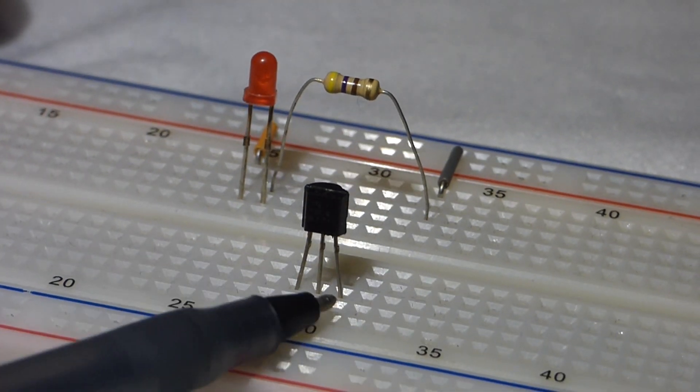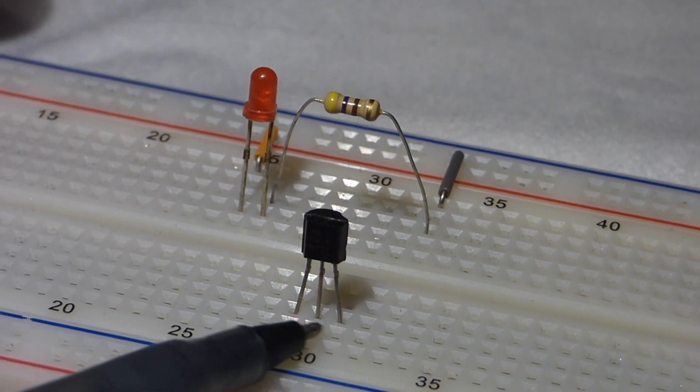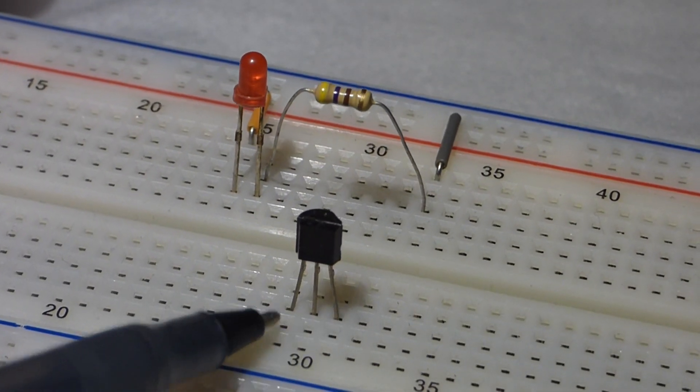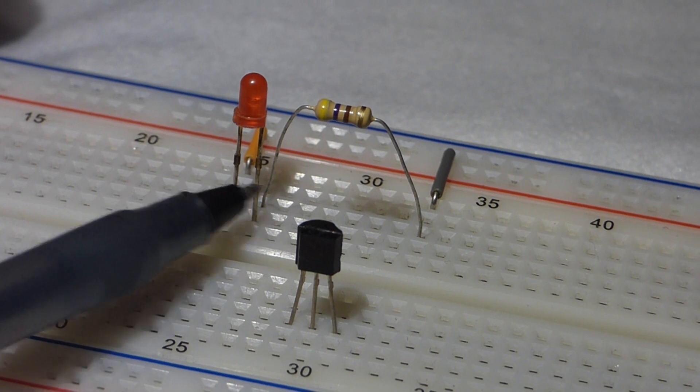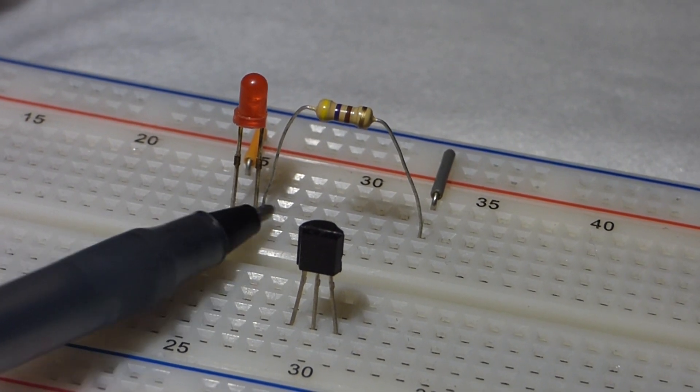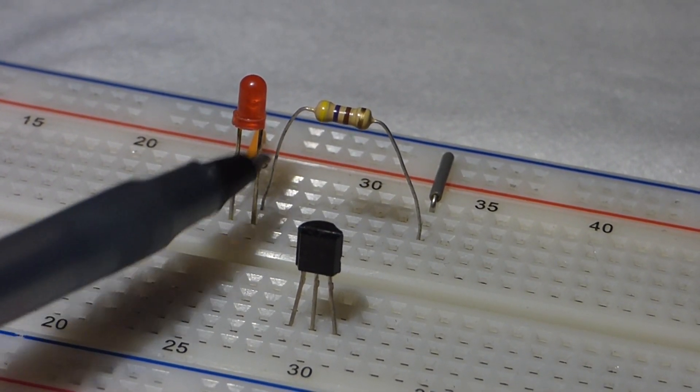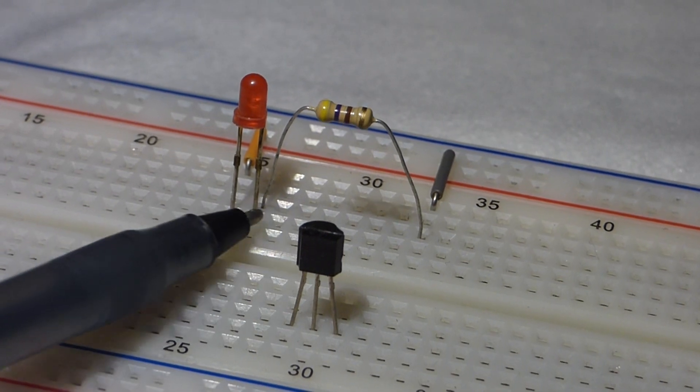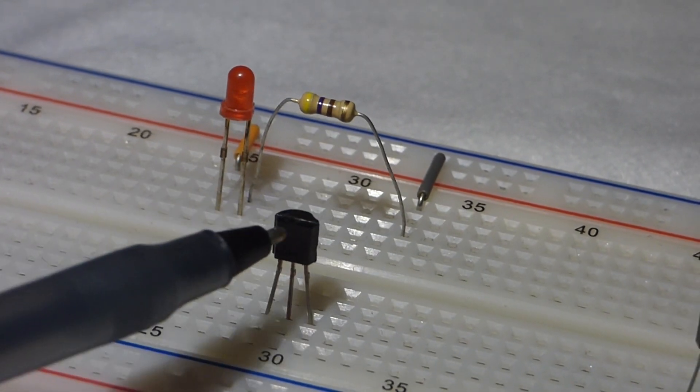Now, the transistor has three leads that you have to deal with. So you have to understand what they're doing. Whereas, most of the basic components only have two leads. And for the most part, you just have to understand the current flowing through them. It's pretty straightforward.